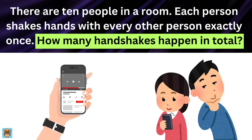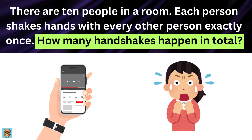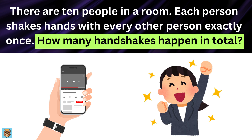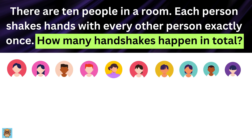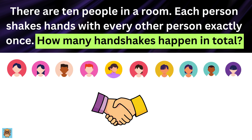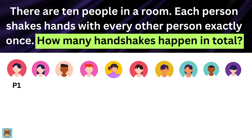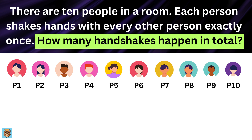By the end, you will see that this problem is much more interesting than it appears, and you will feel amazing for solving it. Imagine the room — you have ten people standing there, and each person is going to shake hands with every other person. To keep things simple, let's give the people names: Person 1, Person 2, Person 3, and so on, up to Person 10.